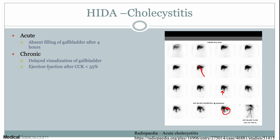Chronic cholecystitis is slightly different — it's chronic inflammation with a baseline level of inflammation in the gallbladder, not something that needs immediate treatment. On HIDA, you're looking for a delay in visualization of the gallbladder plus or minus the ejection fraction. We give CCK, which contracts the gallbladder and releases tracer. If the ejection fraction — how quickly things are excreted after CCK — is under a certain amount, that's indicative of chronic cholecystitis, meaning contraction is slower than normal.